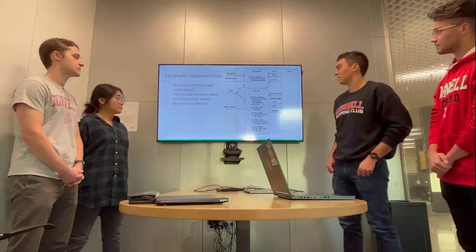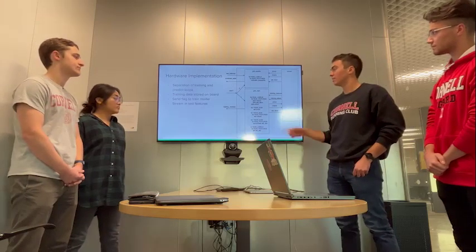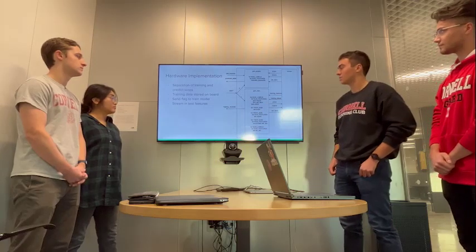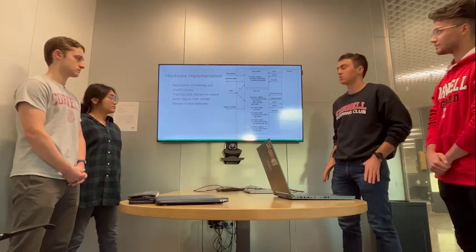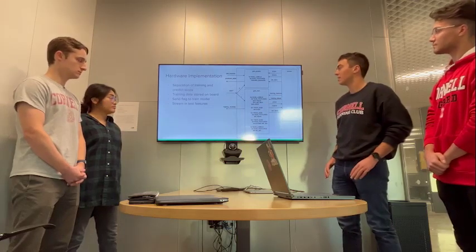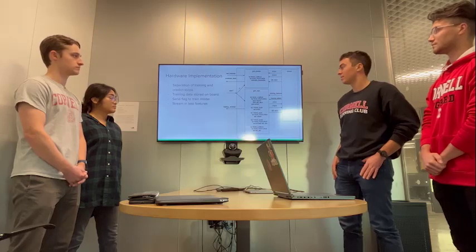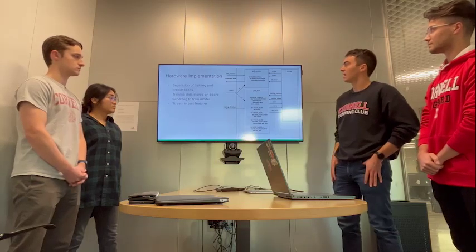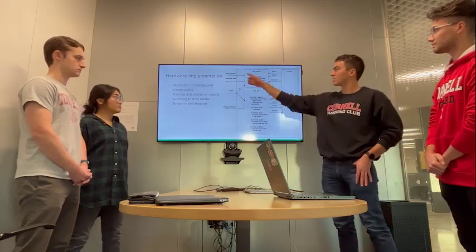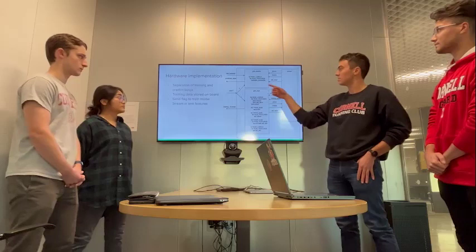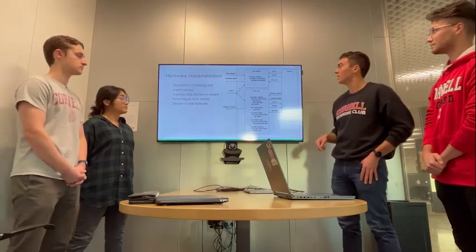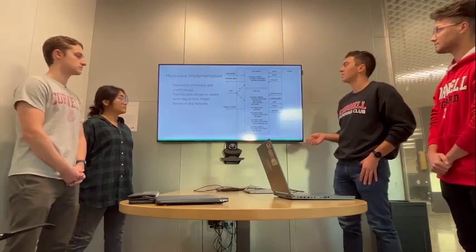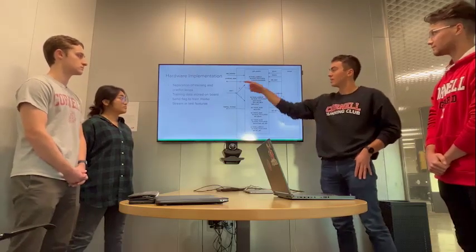Once that's done, the FPGA sends a training finish flag back to the ARM, at which point we know the model is trained and ready to receive features to predict. After that, we can stream in all of our test features into the predict loop, which will predict what flower it thinks it is based on the features and send out its prediction.